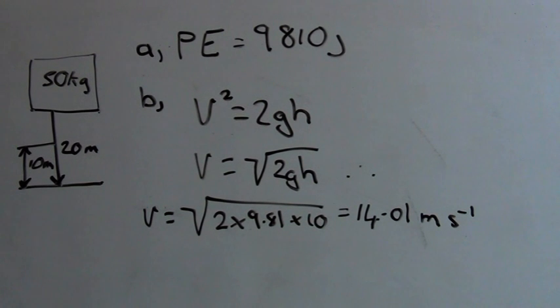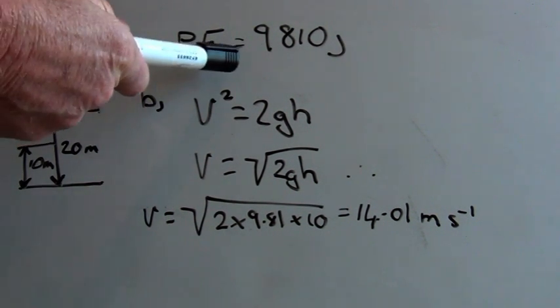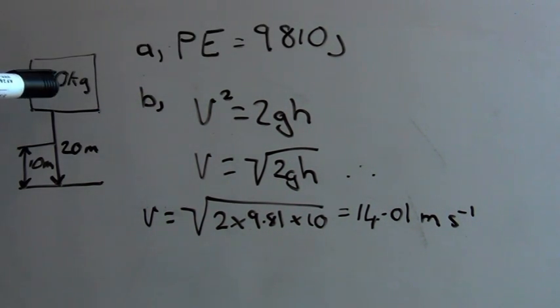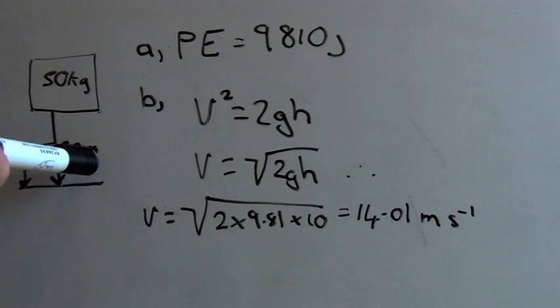So we've now calculated the potential energy for a 50 kilogram body stored 20 meters above the ground, and if it was allowed to fall freely what the velocity would be at 10 meters high. That's my final example. If you've got any other particular examples you'd like me to work through, please post them in the comments and don't forget to subscribe to my channel.